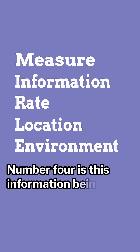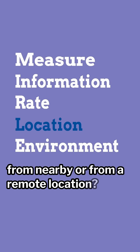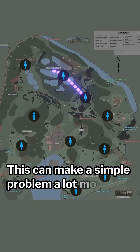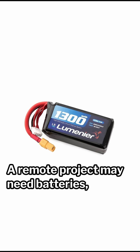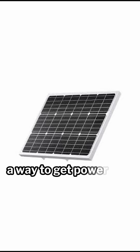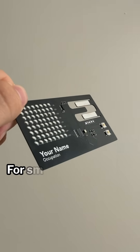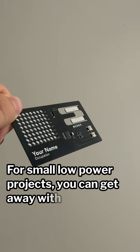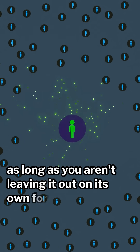Number four: is this information being measured from nearby or from a remote location? This can make a simple problem a lot more complicated. A remote project may need batteries, a way to get power, and a transmitter or receiver. For small, low-power projects, you can get away with a lot as long as you aren't leaving it out on its own for too long.